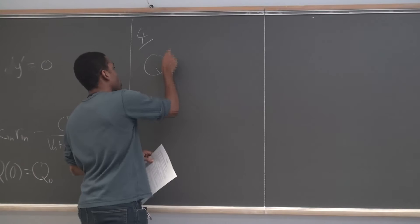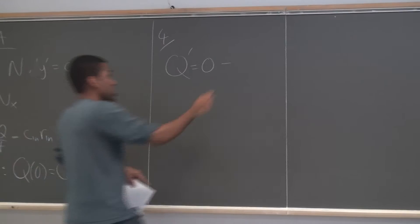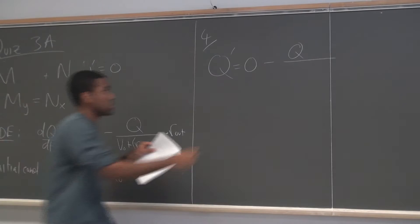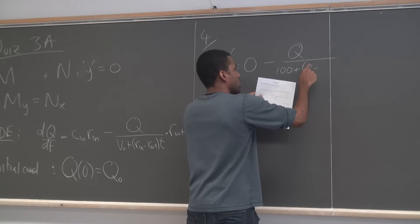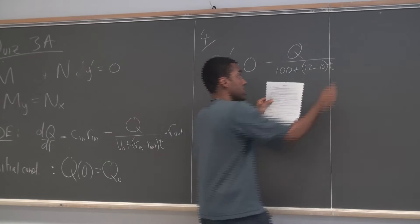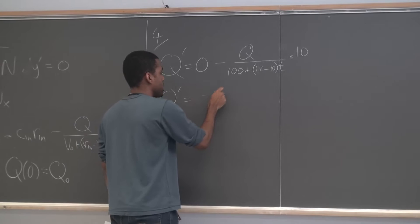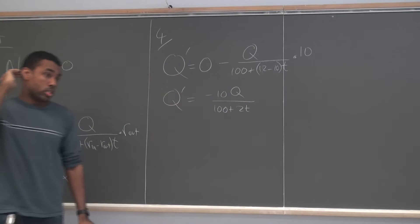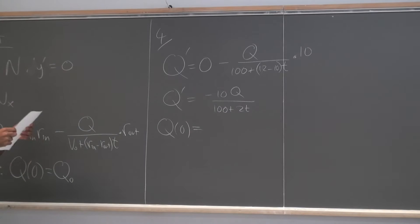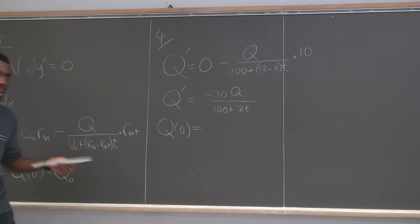Since pure water is coming in, there's no salt, so the concentration in is zero. The initial volume was 100 gallons, rate in was 12, rate out was 10, so we multiply 2 by t. Since the rate out is 10, you get: Q' = -10Q / (100 + 2t). The initial condition: the tank contains 100 gallons with 10 pounds of salt, so Q(0) = 10.